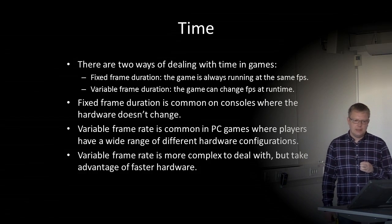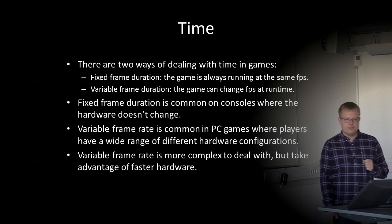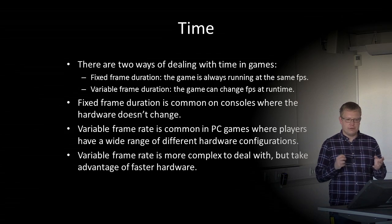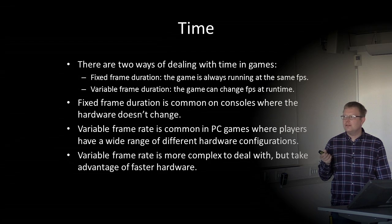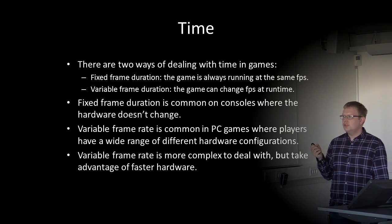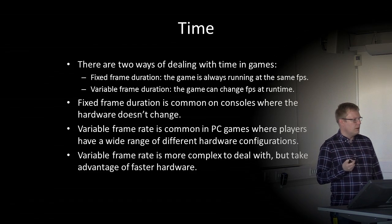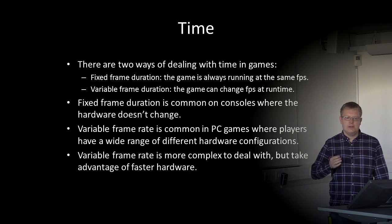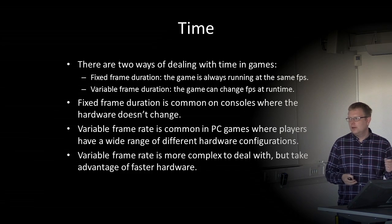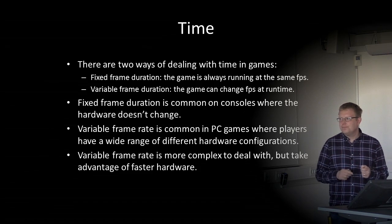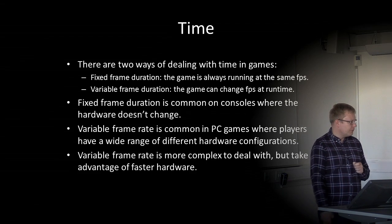There are two ways of dealing with time in games. We can have a fixed frame duration where the game always runs at the same FPS — common on consoles where the hardware doesn't change. Or we can have a variable frame duration where the frame rate can change at runtime — more common in PC games where players have a wide range of hardware. Variable frame rate is more complex to deal with but takes advantage of faster hardware.